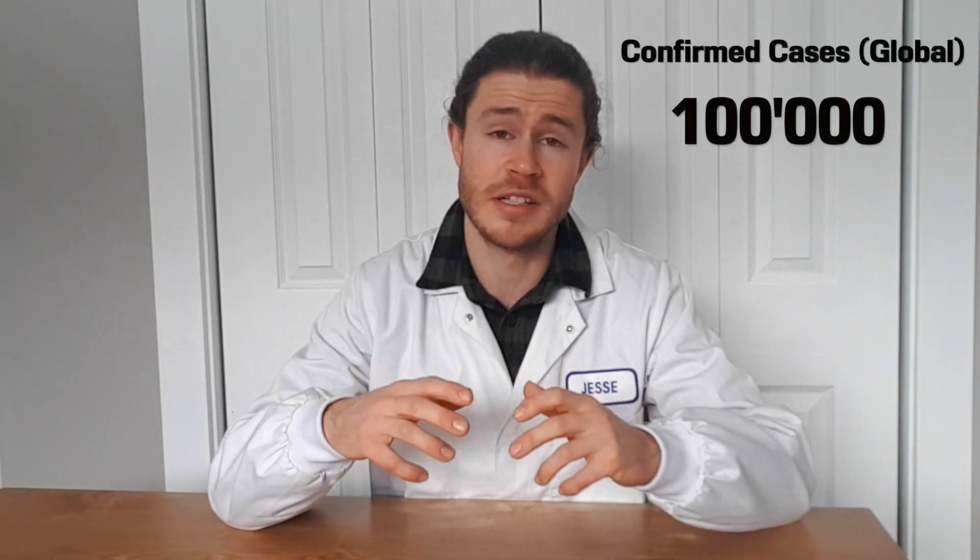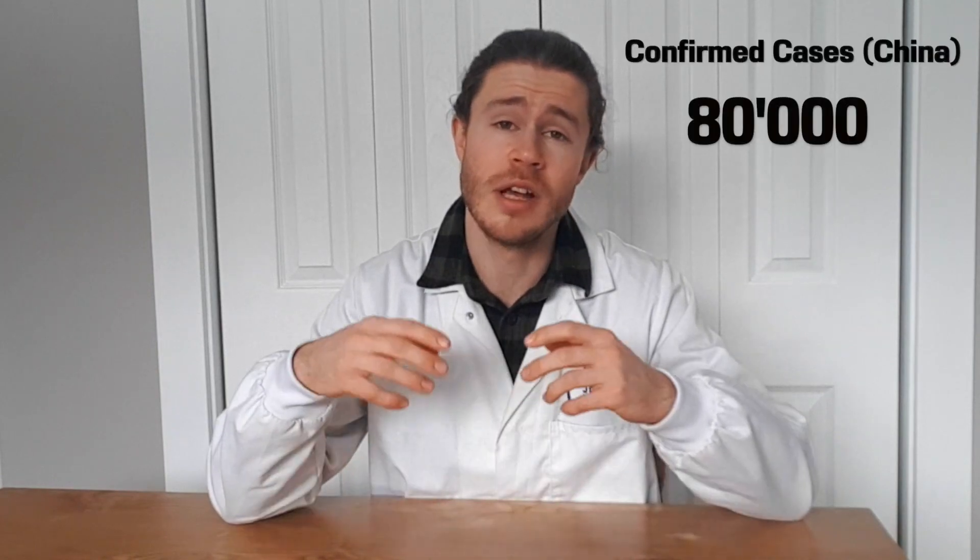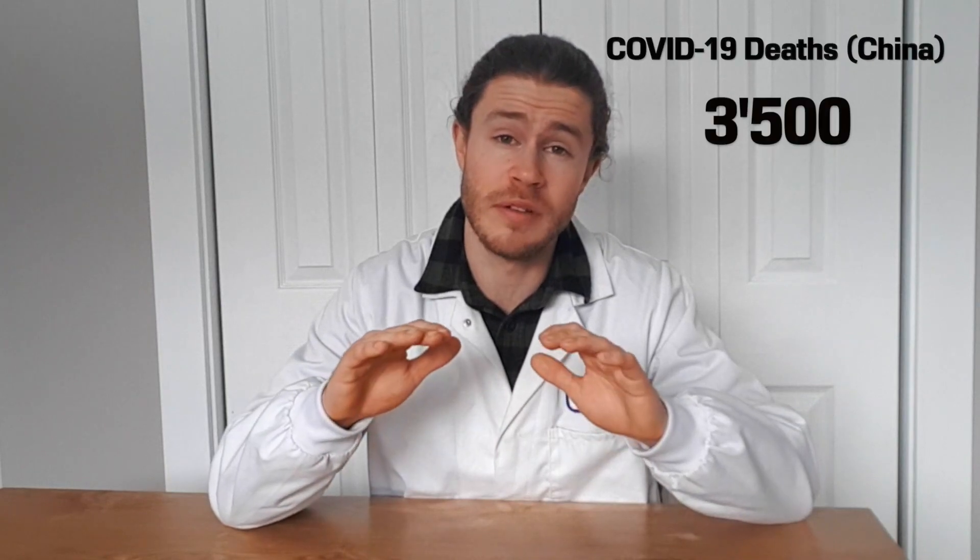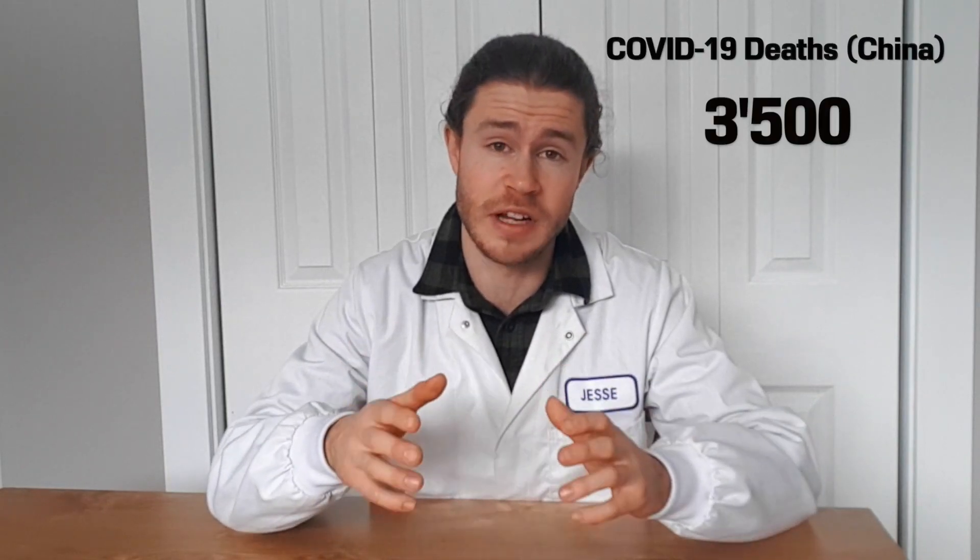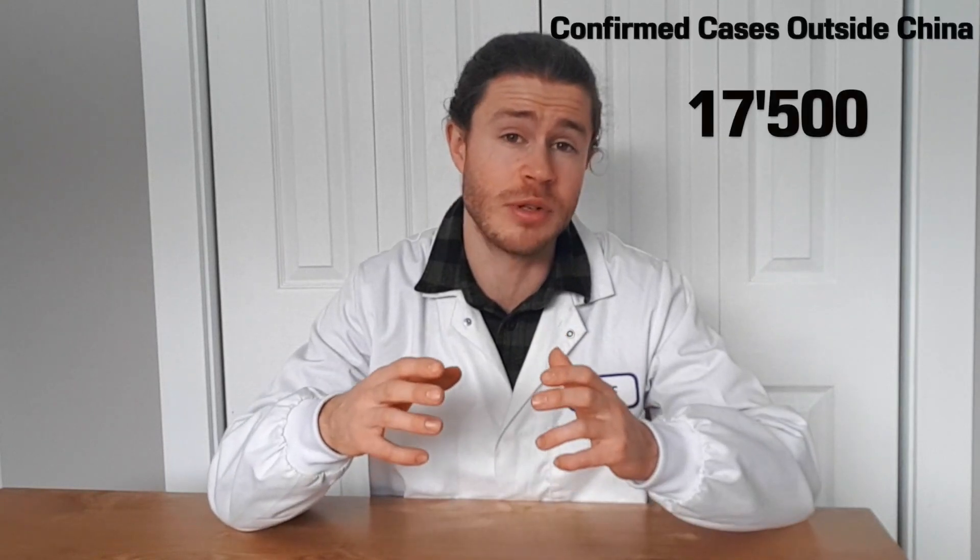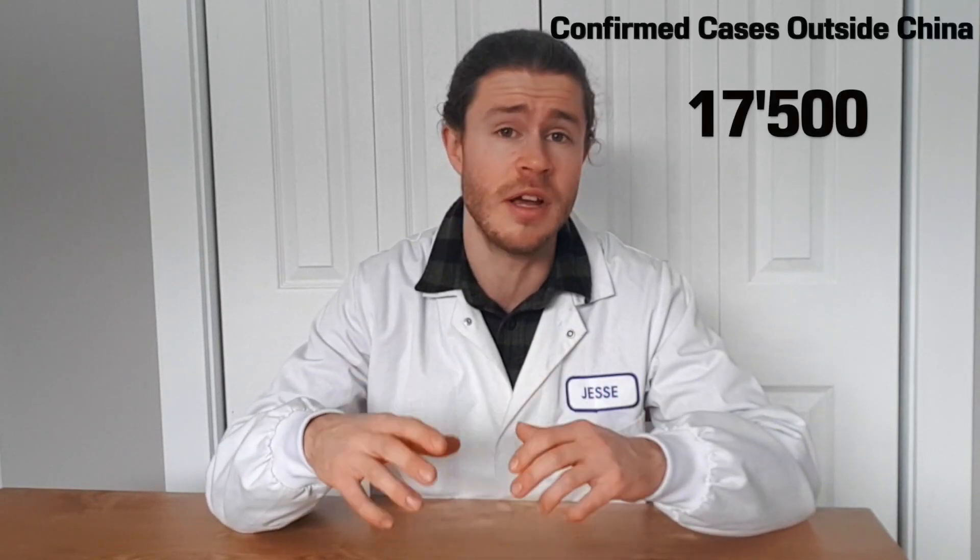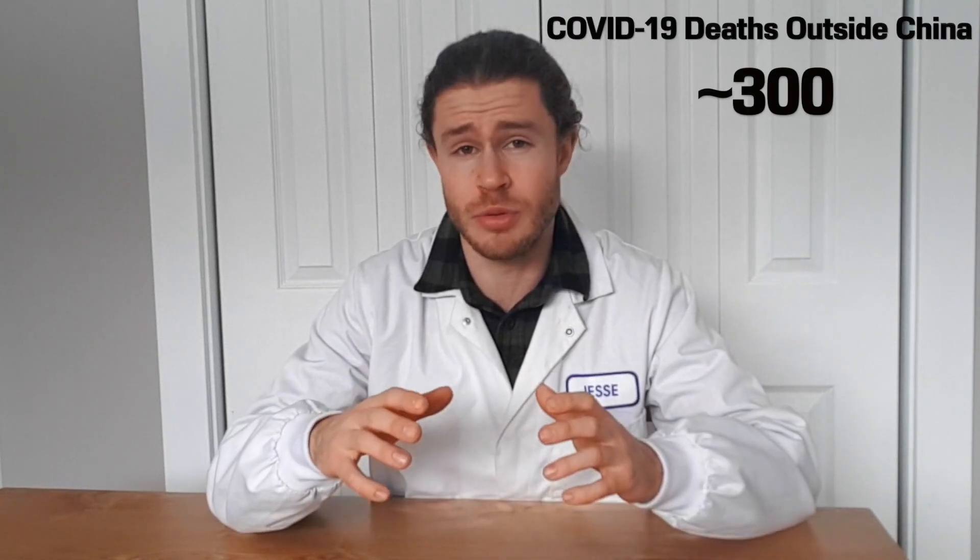To date there's been just under 100,000 confirmed cases around the world and 80,000 of those confirmed cases were within China. Of those 80,000 cases about three and a half thousand people have died from that coronavirus infection. Outside of China there's been about seventeen thousand five hundred confirmed cases of coronavirus and of those seventeen and a half thousand cases just over three hundred people have died.